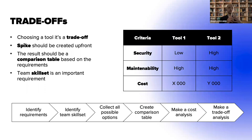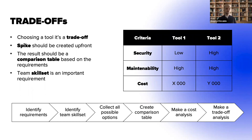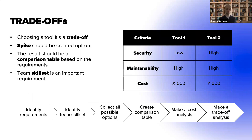What does the client expect from implementing that tool — for example, improving security? We also need to take into account the team's skill set. If the team has skills in Azure DevOps, most likely that would be the best choice for them. Collect all possible options, compile them into a table, validate with the customer if needed, create a comparison — in simple words, a trade-off and cost analysis — and finally choose based on that.